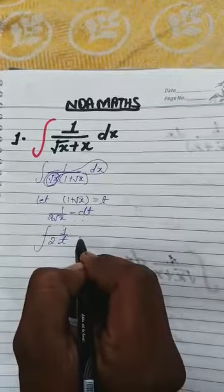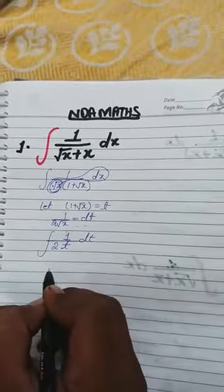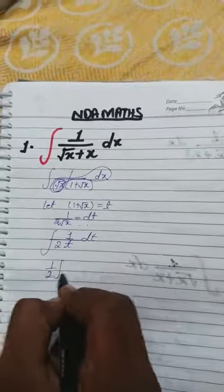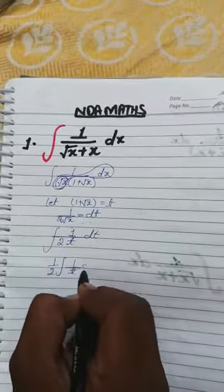Integration sign is equal to dt. We can write it, so one upon two common लیتے ہیں, one upon t dt.